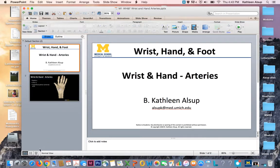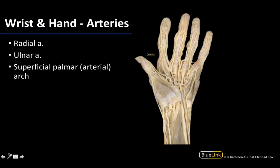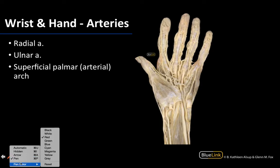Hello all. Let us discuss some of the arteries associated with the wrist and the hand. As we can recall from active learning sessions, the main supply for the wrist and the hand is going to be from the radial as well as the ulnar arteries, similar to what you had in the forearm.